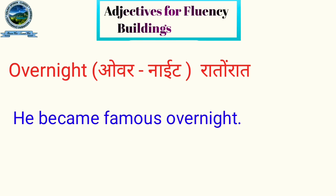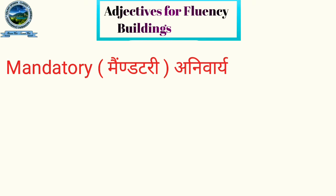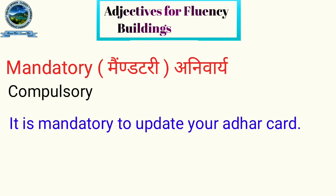Next: 'overnight.' For example, he became famous overnight. Next adjective is 'mandatory,' spelled M-A-N-D-A-T-O-R-Y. Mandatory means compulsory or obligatory. For example: it is mandatory to update your Aadhaar card — meaning it is compulsory.